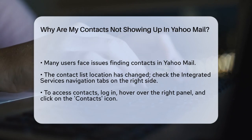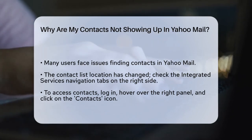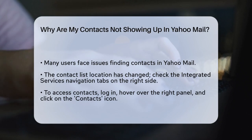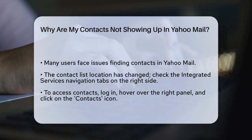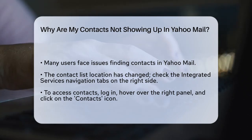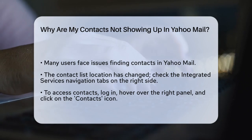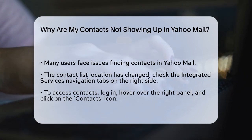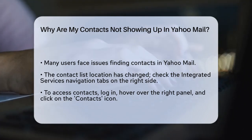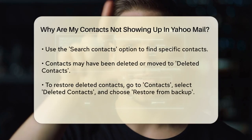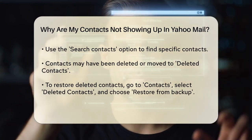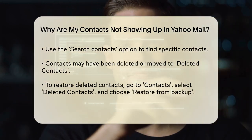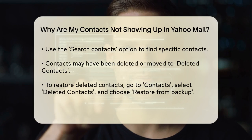First, it's important to check the location of your contact list. Yahoo Mail has made some changes recently, so you might need to look in a different place. The contact list is now found in the Integrated Services navigation tabs on the right side of the screen. To access it, log into your Yahoo Mail account, move your cursor to the right side panel, and click on the Contacts icon next to Sort. This will open your contact list, where you can browse or use the Search Contacts option to find a specific contact.